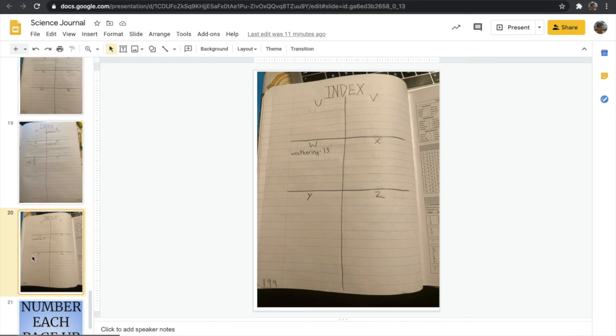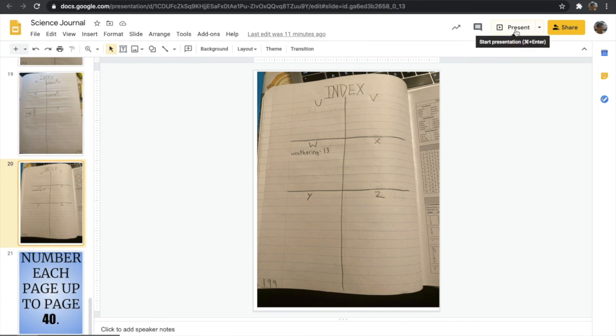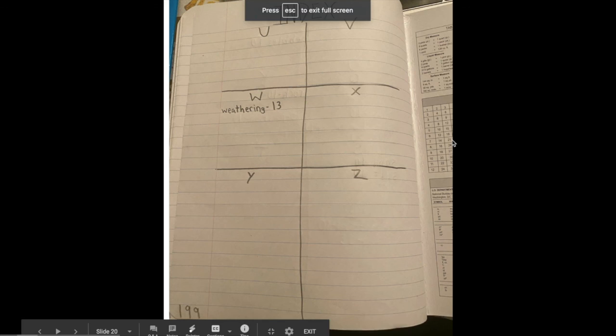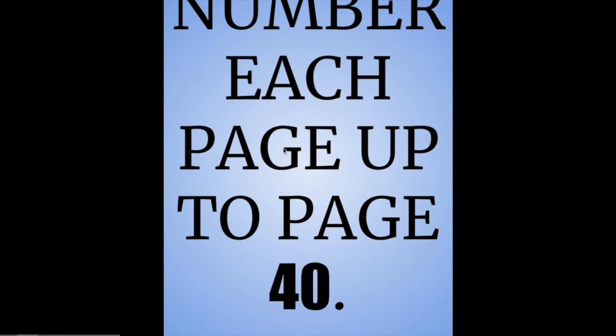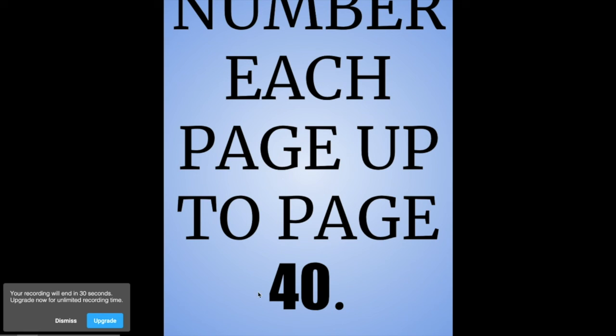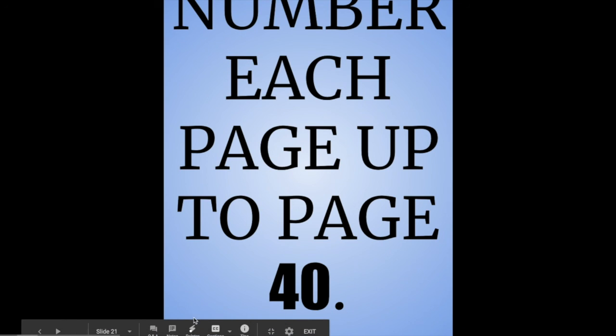Now, let's go back to our slide. After you have updated it, I want you to number each page on the corner up to page 40. As you saw at the beginning, we had numbered it up to page 16. I want you to number your book up to page 40. Please make sure you work on updating your Science Journal over the weekend.